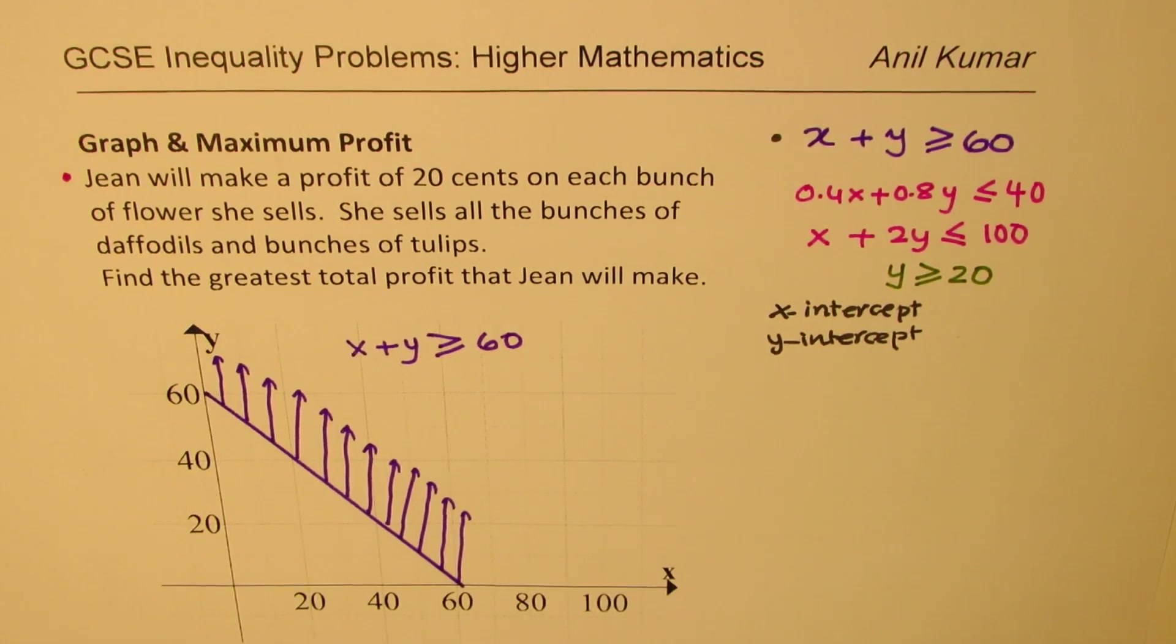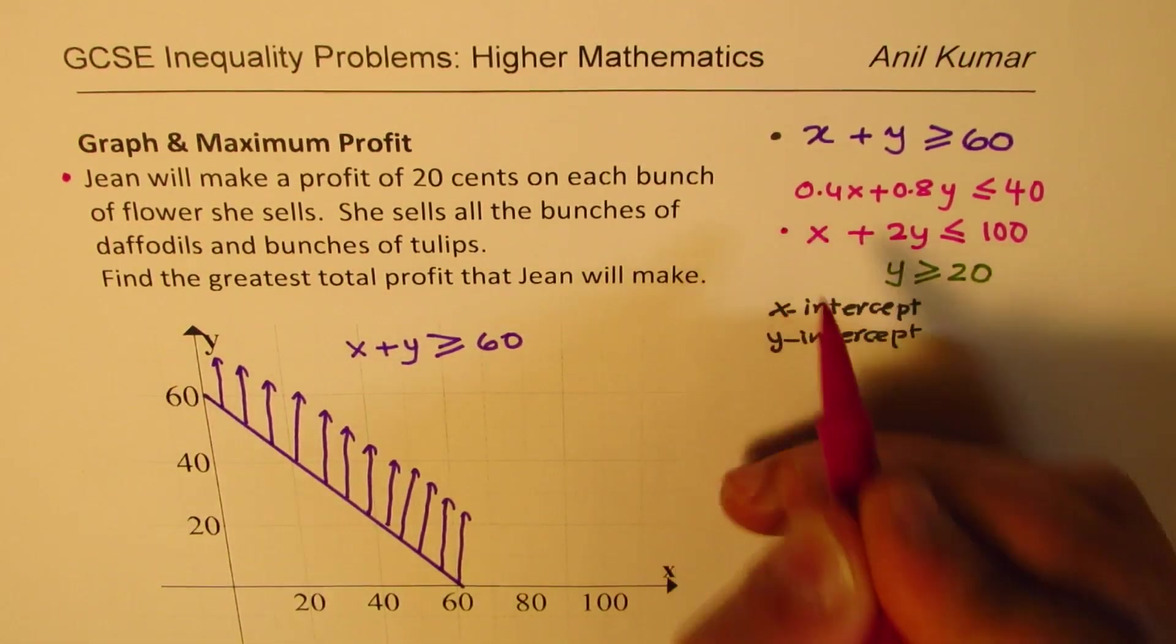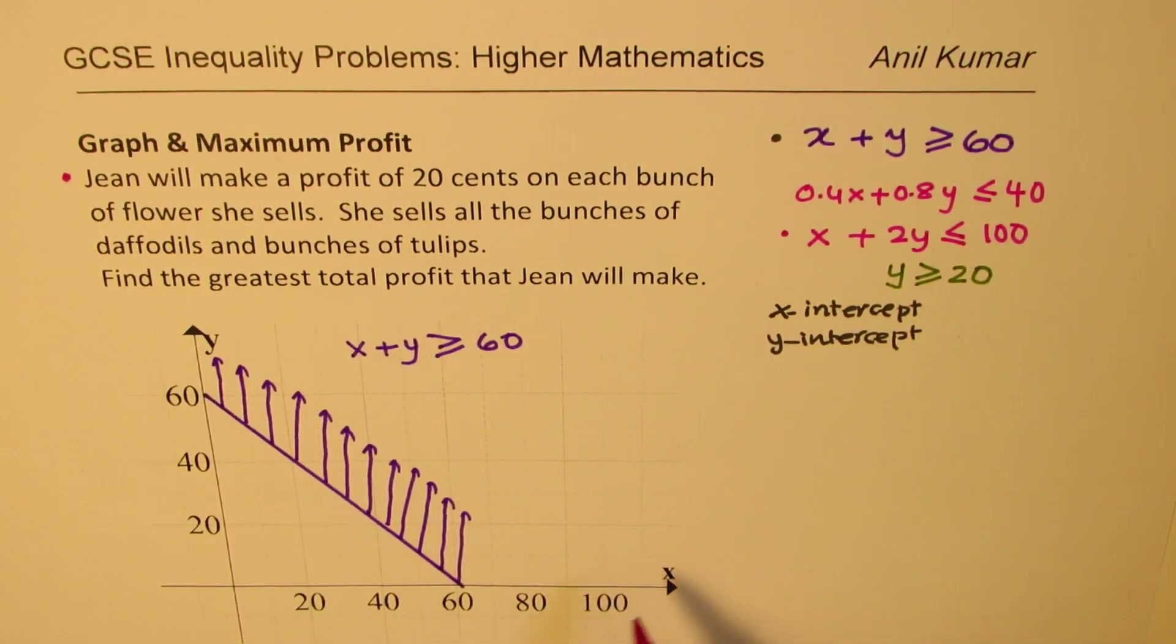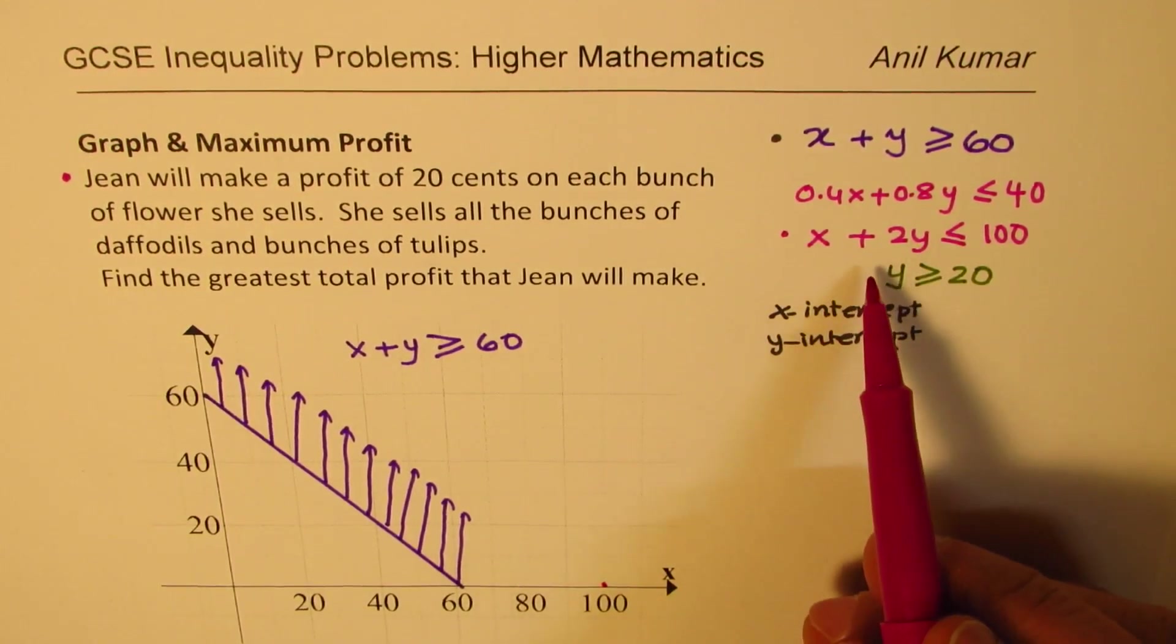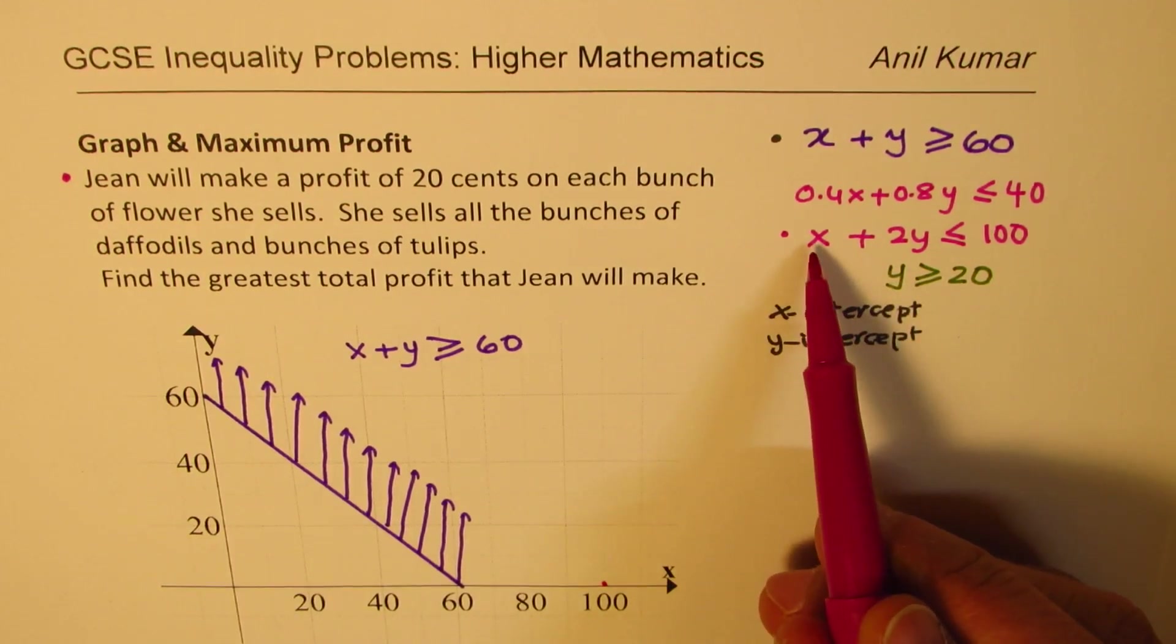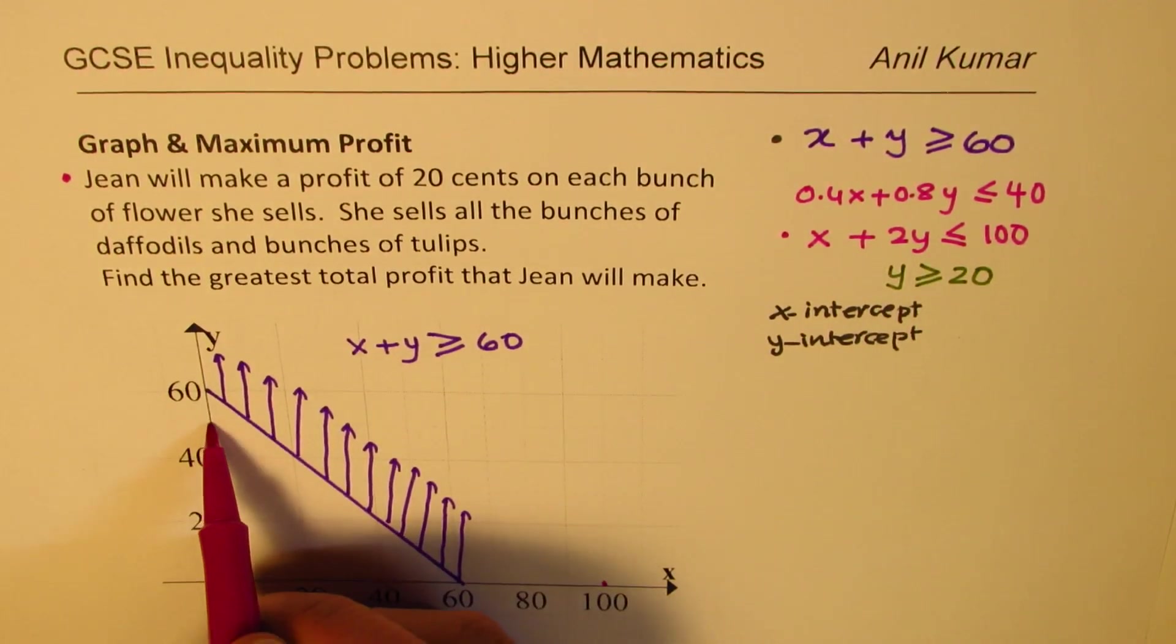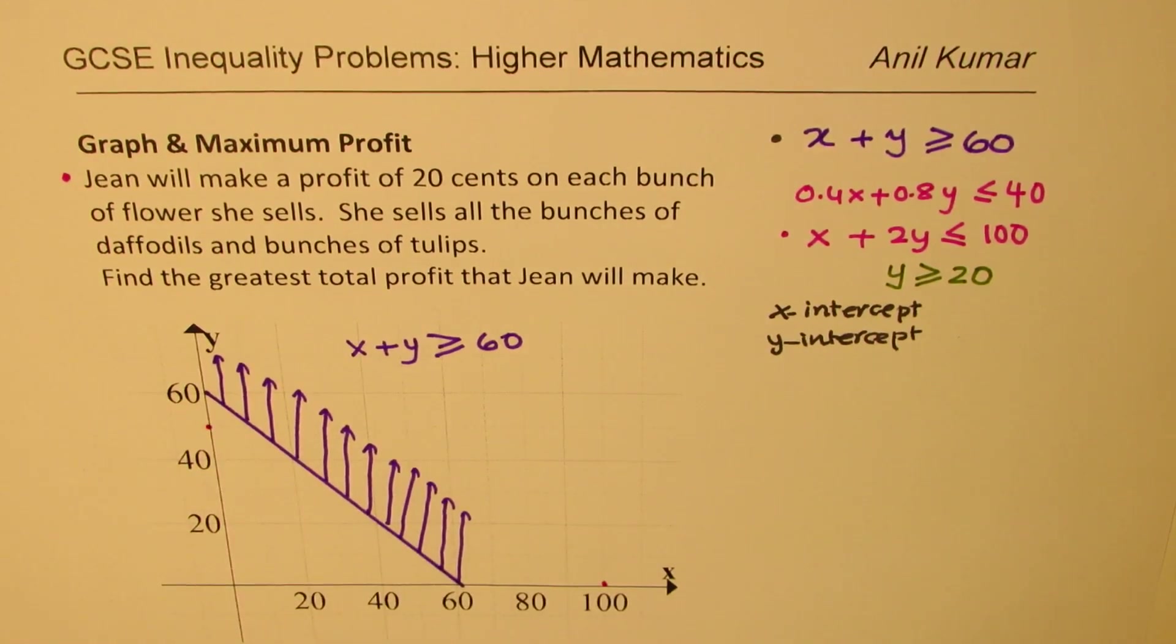Now the next graph is X plus 2Y equals to 100. If Y is 0 X is 100. So we get X as 100 here. 20, 40, 60, 80, and this is 100. So that is 100 for us. But when X is 0, then Y will be 100 divided by 2, will be 50. So it will be right there. So we have to join these two points to get the next graph.